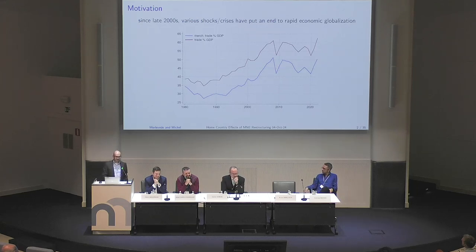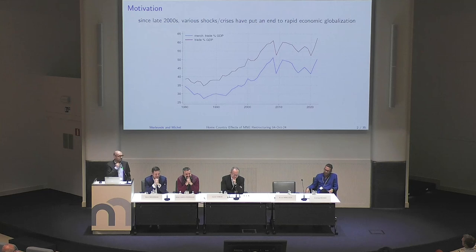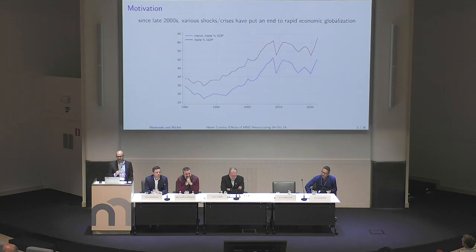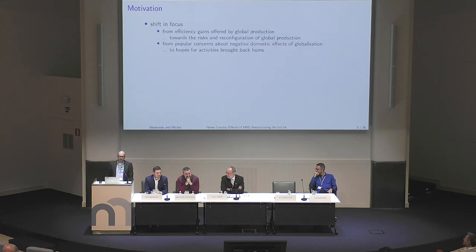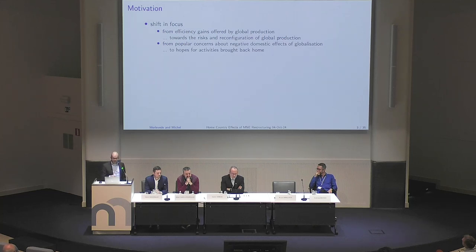Being the third paper to speak on deglobalization, you typically have graphs that return in any presentation. Our work, which is going to be empirical, is focused on this 2010–2020 period. Call it deglobalization, slowbalization, what you want — it's the upward trend in the trade-to-GDP ratio that basically stagnates during this period. This has led to a shift in focus, from efficiency gains offered by global production towards risk and reconfiguration of global production.